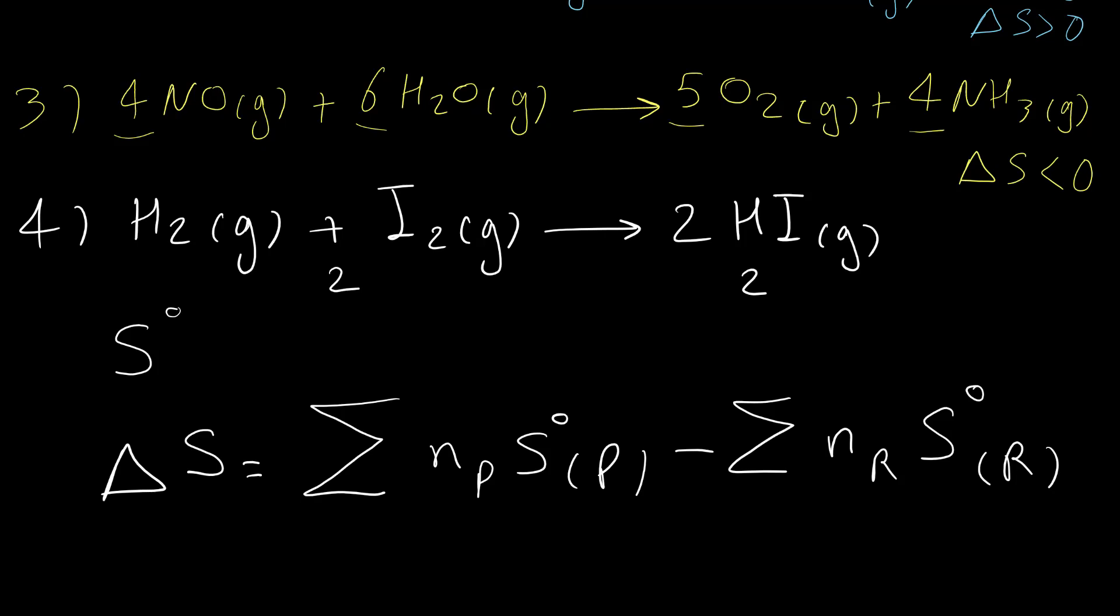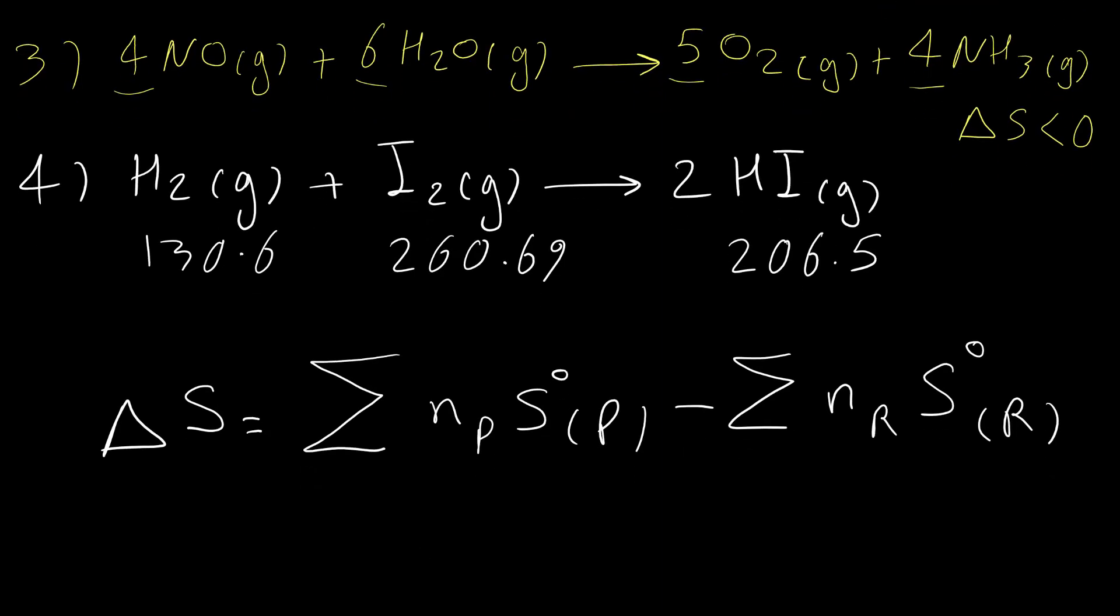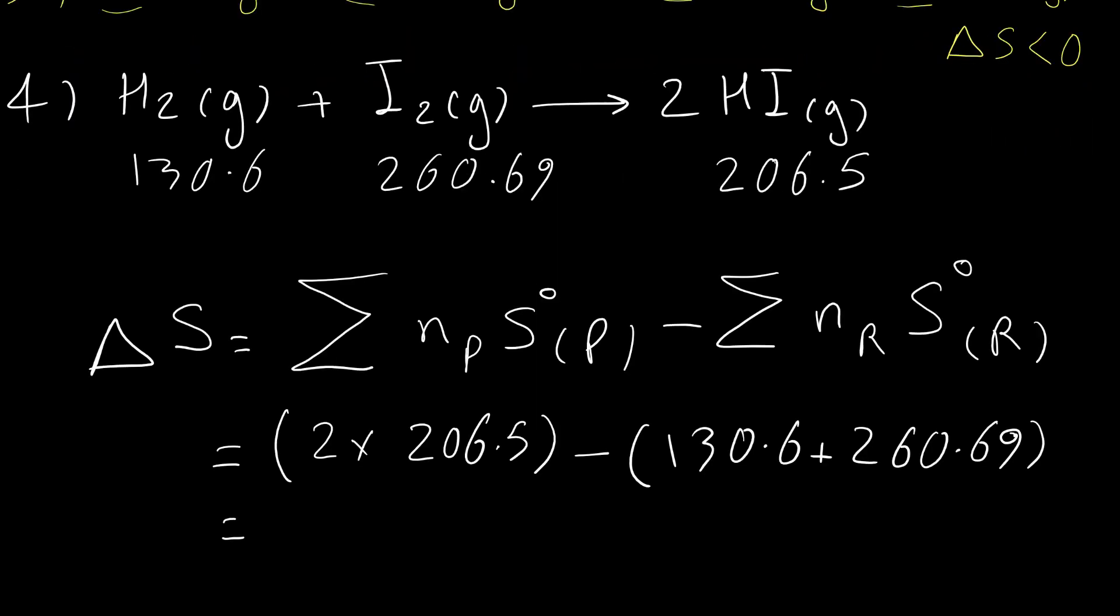At the beginning, I would like to calculate the change in entropy for the last example that we were not able to predict based on those three simple rules. Entropy value for hydrogen gas is 130.6, for iodine is 260.69 in gas state, and for hydrogen iodide is 206.5. So let's use this formula and calculate the change in entropy. We have product HI, so change in entropy is, and the coefficient for HI is 2, so 2 times 206.5 minus entropy for reactants, and the answer for this reaction is positive